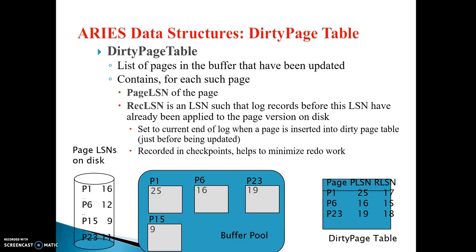The dirty page table is a data structure listing pages in the buffer that have been updated. It indicates memory management — memory is divided into different tracks and sectors. Each page in the track sectors can be divided into a number of pages. Importantly, RecLSN is the LSN such that log records before this LSN have already been applied to the page version on disk. It is set to the current end of log when a page is inserted into the dirty page table, and is recorded in checkpoints to help minimize redo work.